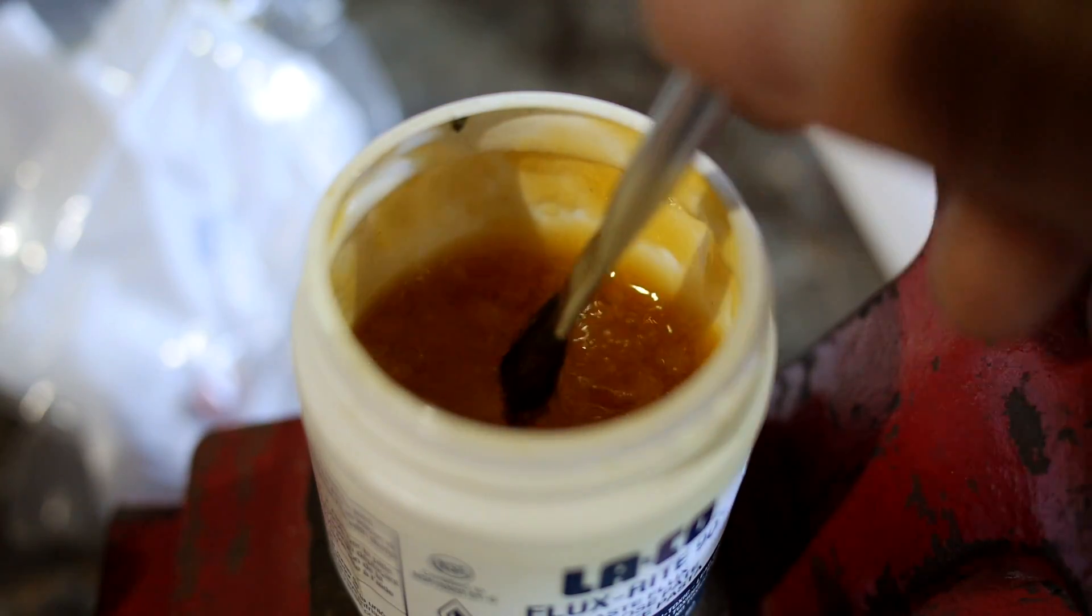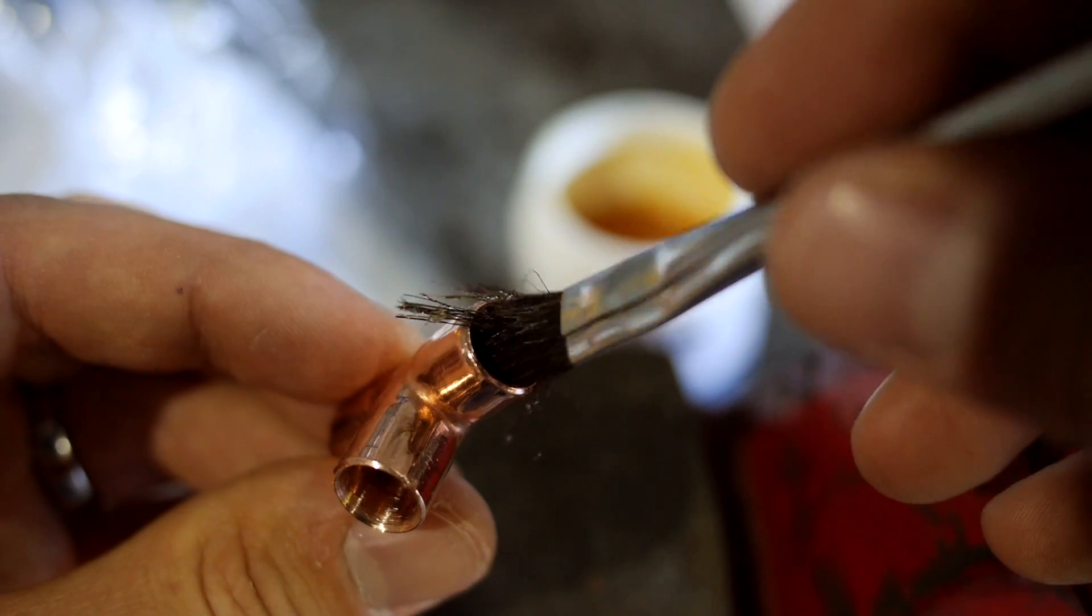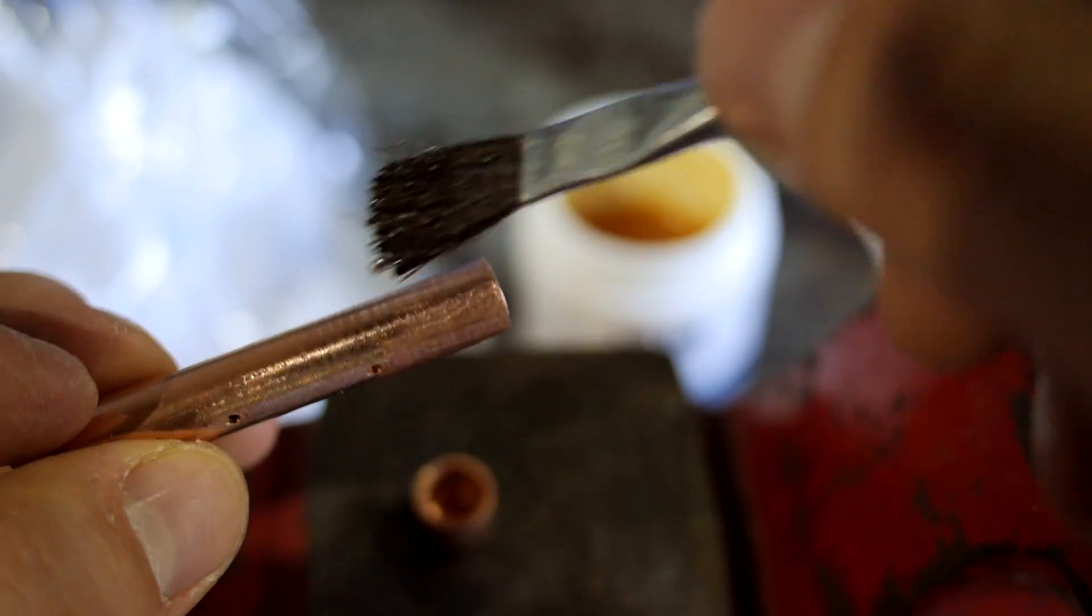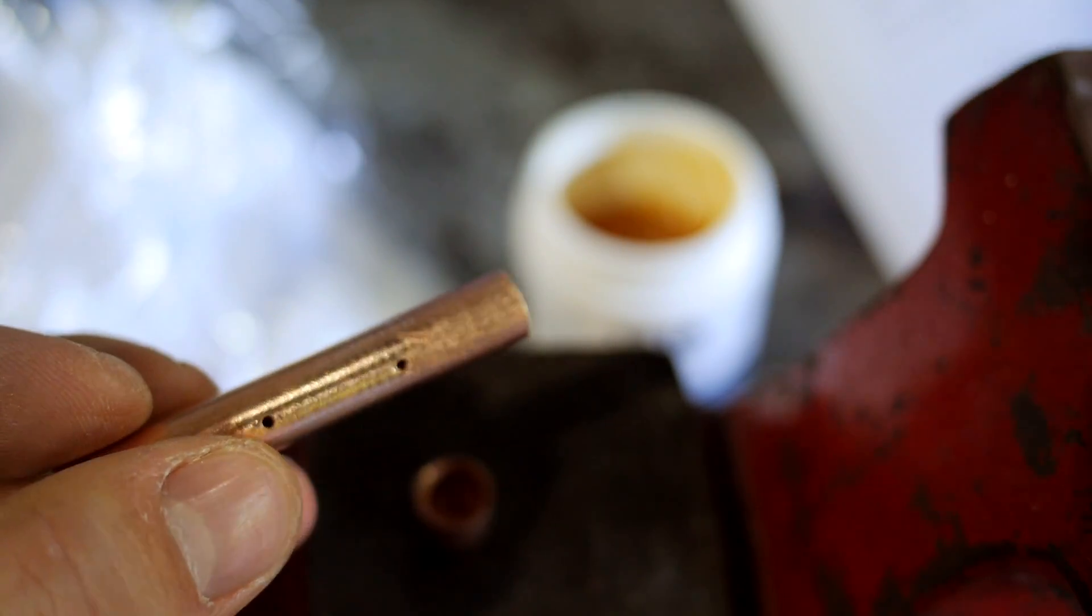It's critical to apply flux to the joint, otherwise the solder will not flow into the joint and will just remain basically where you lay it on. So I use a small brush to apply flux to both the pipe and the inside of the fitting.